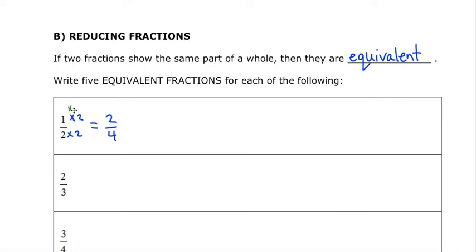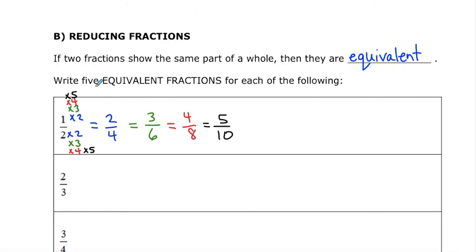Or I might want to multiply my fraction by 3 — whatever I do to the top number, I have to do to the bottom number. So 1 times 3 is 3, and 2 times 3 is 6. I can keep going: multiplying by 4 gives 4 over 8, multiplying by 5 gives 5 over 10, and multiplying by 6 gives 6 over 12. That's one way to find equivalent fractions — multiply the numerator and denominator by the same constant so that when we reduce them back to lowest terms, we get back to the same fraction.